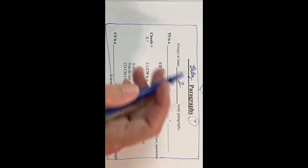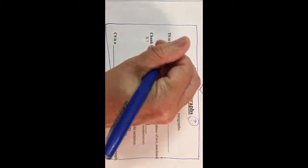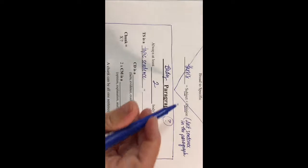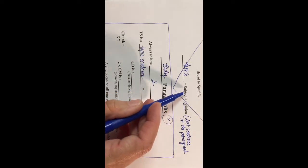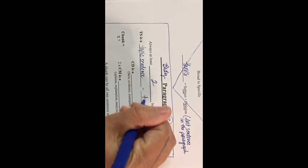It always starts with a topic sentence—TS. A topic sentence is made up of two things: much like the thesis, it's a baby topic of that subject, so it's a topic of that subject and then an opinion.